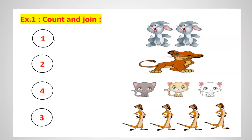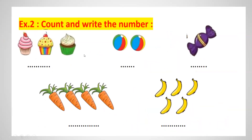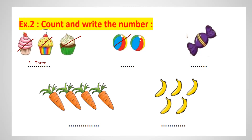After exercise: here, count and write the number. We are going to write it both ways, by digits and by letters. So let's count — how many cupcakes can you see? We have 1, 2, 3 cupcakes. So how can we write 3? Put 3 then write it by letters: T-H-R-E-E. Count how many balls — 1, 2. They are 2, so put number 2 and write T-W-O.